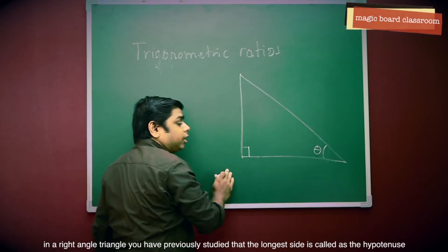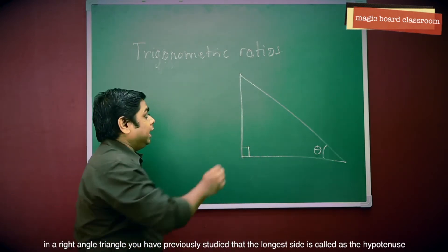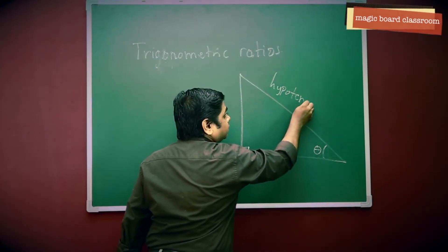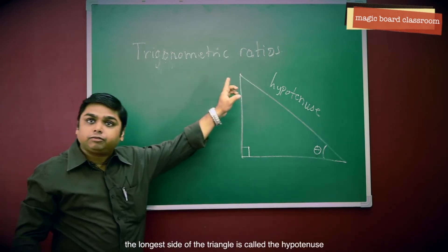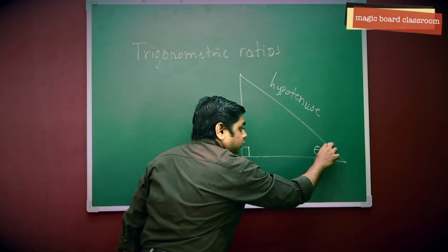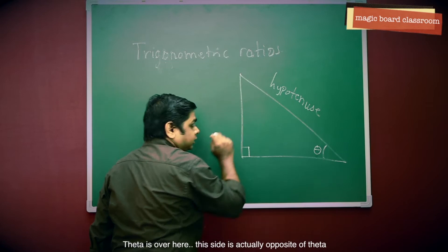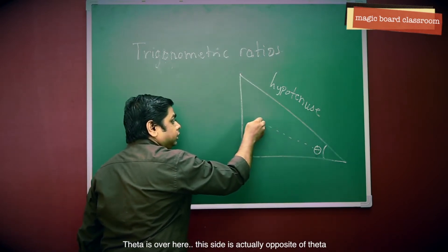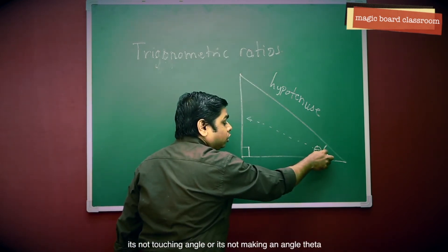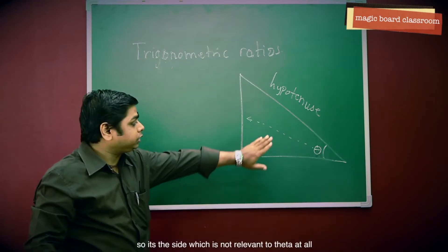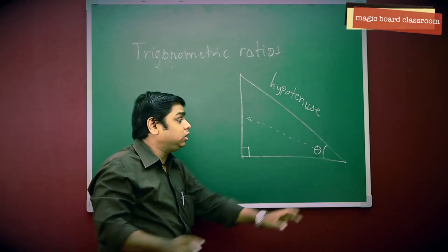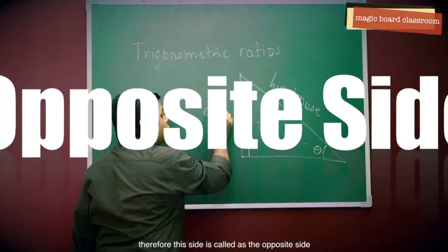In the right angle triangle, you have previously studied that the longest side is called the hypotenuse. The longest side of the triangle is called the hypotenuse. Now, theta is over here. This side is actually opposite to theta, meaning it is not touching the angle or it is not making an angle theta — it is the side which is not relevant to theta at all. Therefore, this side is called the opposite side.